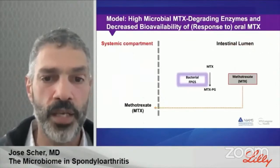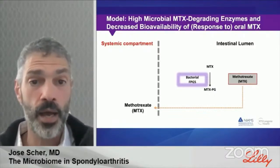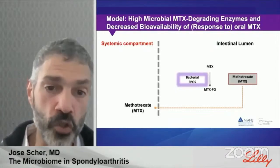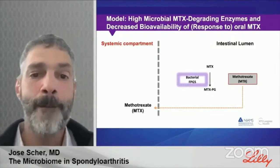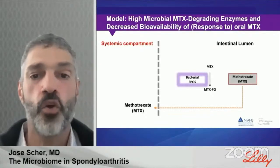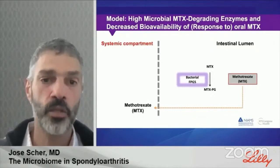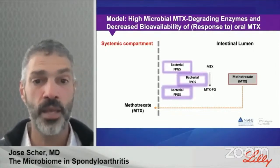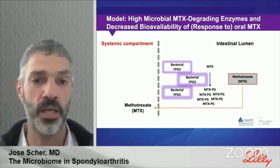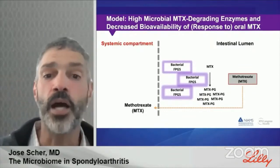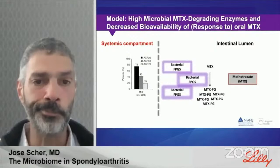Taking this together, here is an imperfect but logical model: in a proportion of rheumatoid patients there is a relatively low abundance of microbes that encode for methotrexate-metabolizing enzymes, so the majority of ingested drug is absorbed in the systemic compartment and acts downstream to mitigate joint inflammation. But in other patients, a higher abundance of these enzymes biotransforms methotrexate within the intestinal lumen, preventing its absorption and clinical utility.